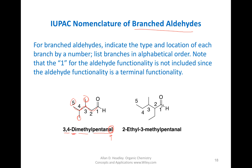Here's another example. Five carbons again, longest chain — this gets number 1. Here's the aldehyde: pentanal. We have ethyl on carbon number 2 and methyl, and since E comes before M alphabetically, we put E first and methyl next.